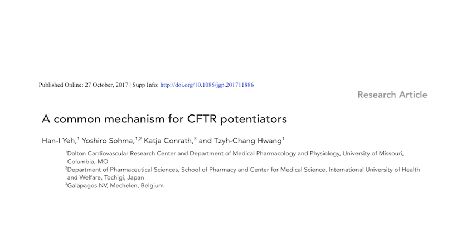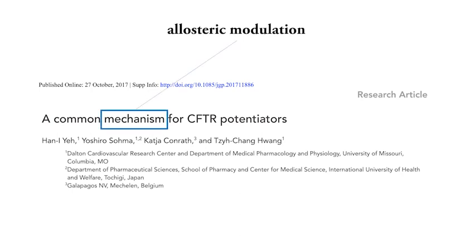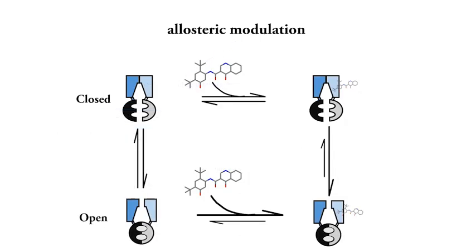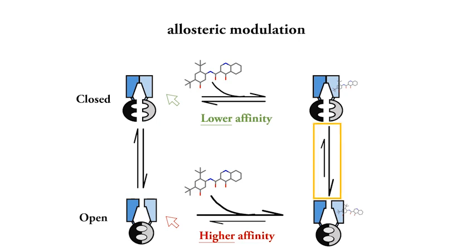In a paper we published in the Journal of General Physiology in 2017, we demonstrated that CFTR potentiators increase CFTR activity through a classical allosteric modulation mechanism. In short, this theory posits that potentiators have a higher binding affinity for the open channels and a much lower affinity for closed channels. The difference in the binding energy can then be used to shift the equilibrium to favor the open channel conformation.